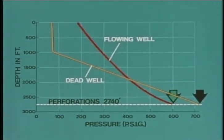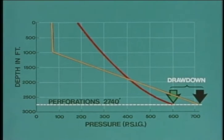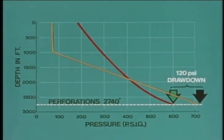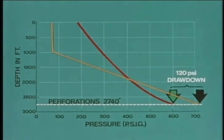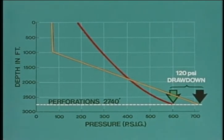The difference between these two pressures, as shown by the bracket, is known as drawdown. In this case, the drawdown is 120 PSI. Drawdown is related to formation productivity and is the pressure difference that causes liquid to flow from the formation into the wellbore.